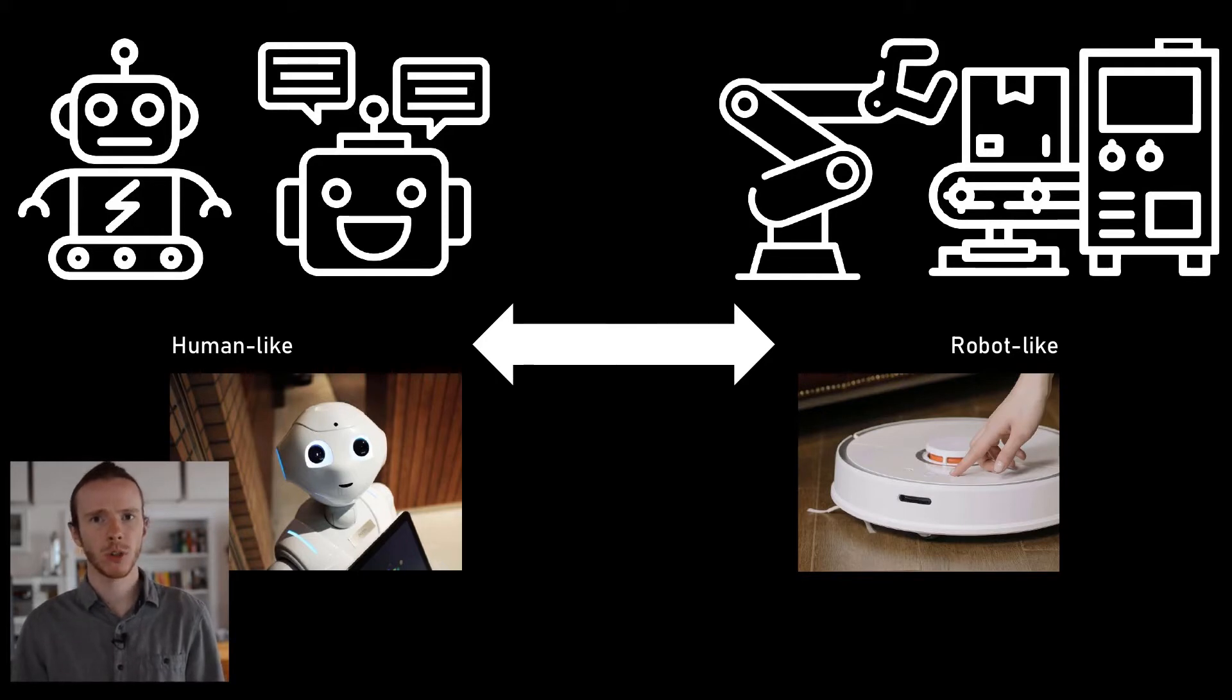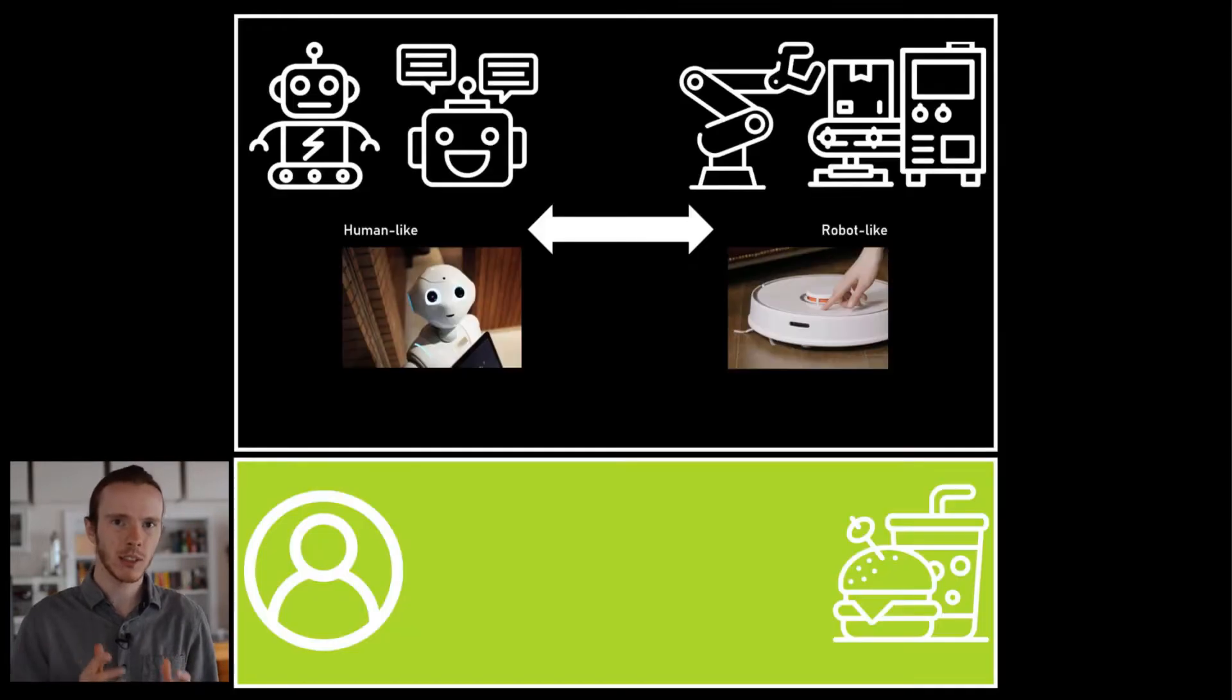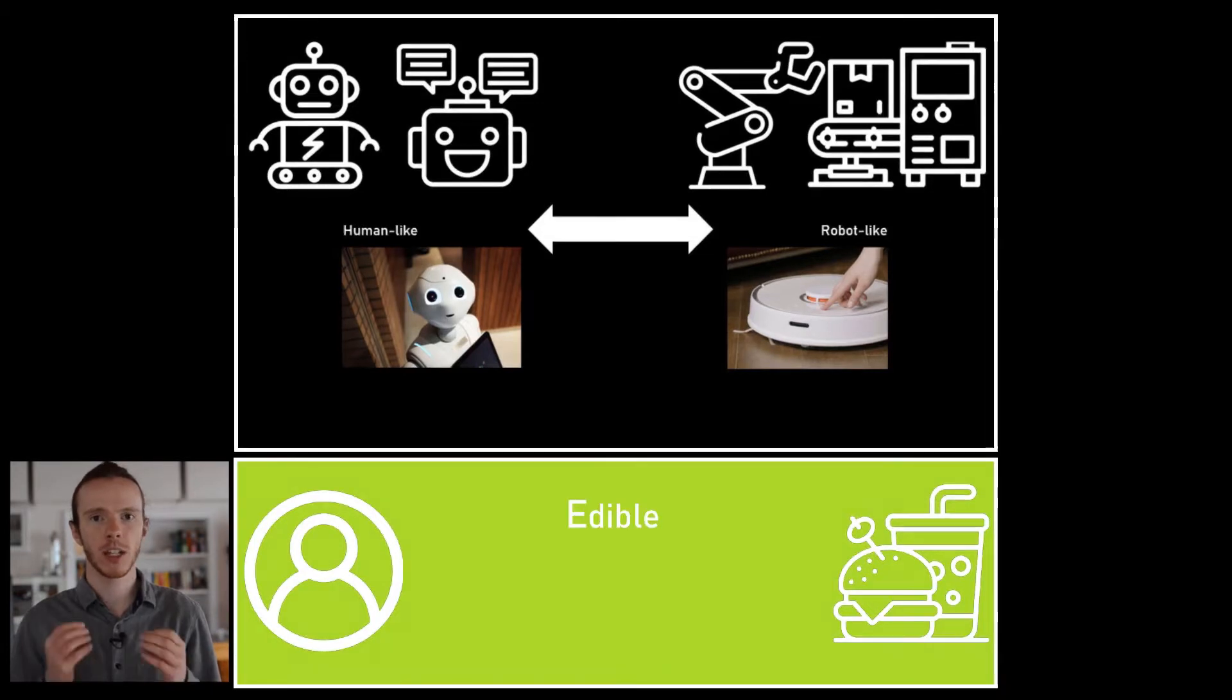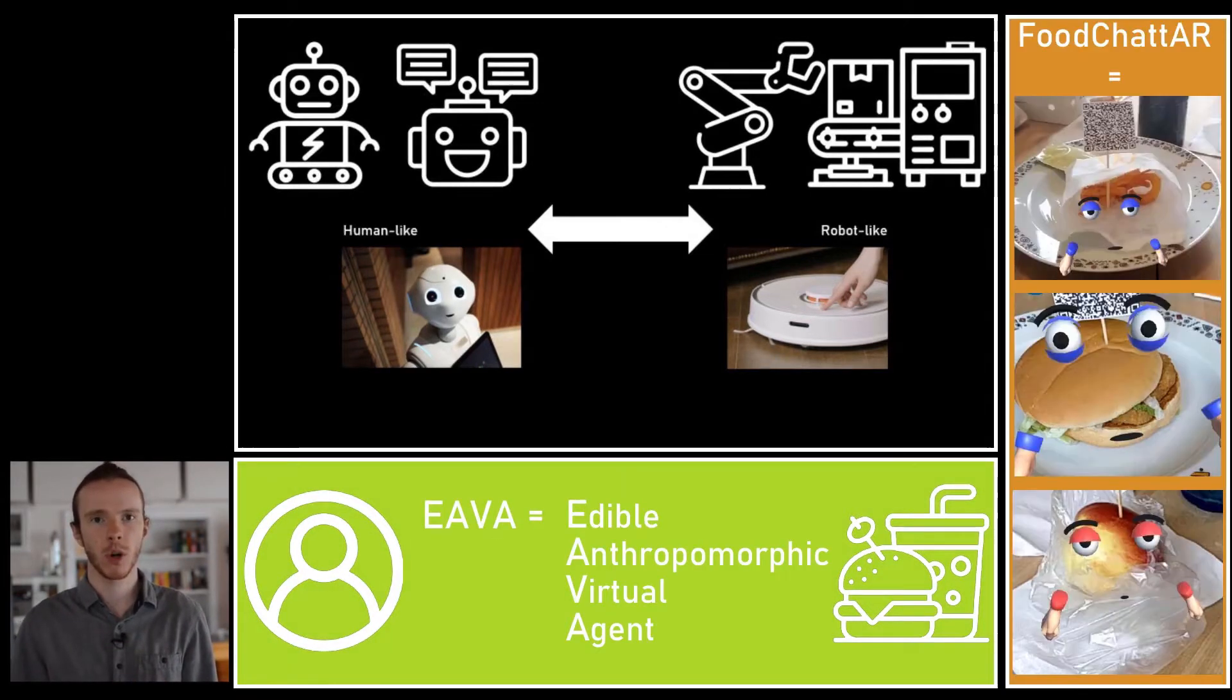In our work we don't want to focus so much on this specific debate but instead explore a new kind of human-to-food interaction with a virtual agent that enables direct communication with your food. We therefore introduced the concept of edible anthropomorphic virtual agents and developed a first functional prototype called Food Chatter to explore the design space around this new interaction.